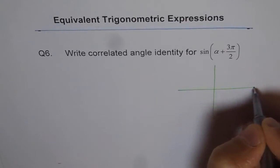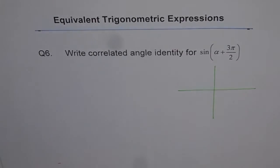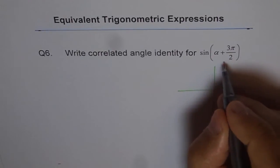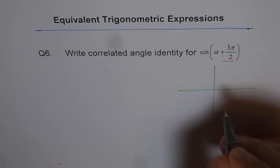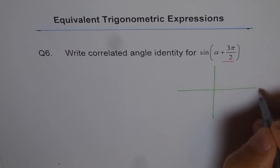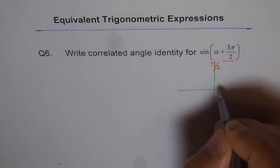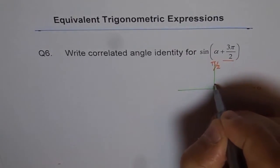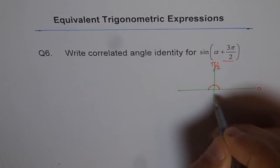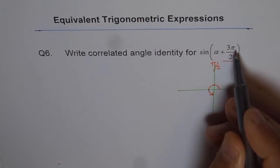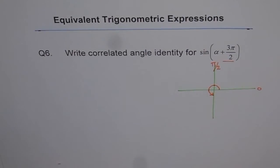So that's our coordinate system. If I am doing alpha plus 3 pi by 2, let me explain what plus 3 pi by 2 means. Starting from 0, this is pi by 2, so this is 1 pi by 2, 2 pi by 2, and 3 pi by 2. So that is the meaning of plus 3 pi by 2.